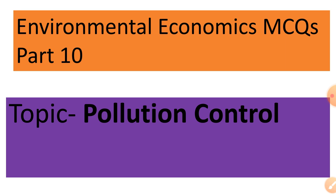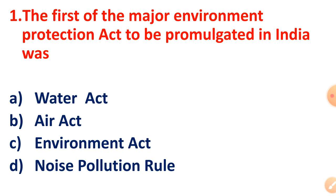Let's start from question number 1. The first of the major Environment Protection Acts to be promulgated in India was: Water Act, Air Act, Environment Act, or Noise Pollution Rule? The correct answer is Option C, Environment Act.